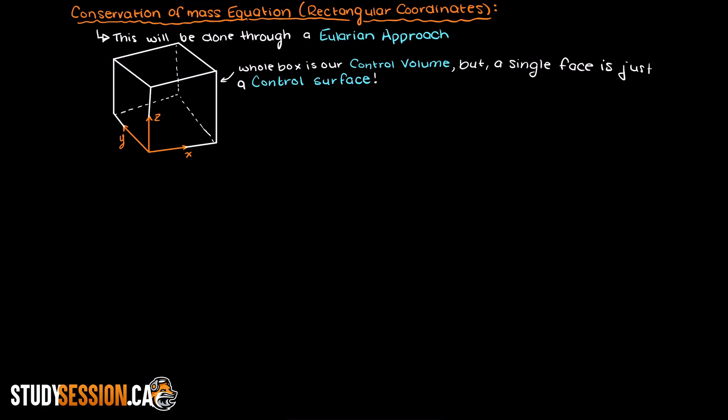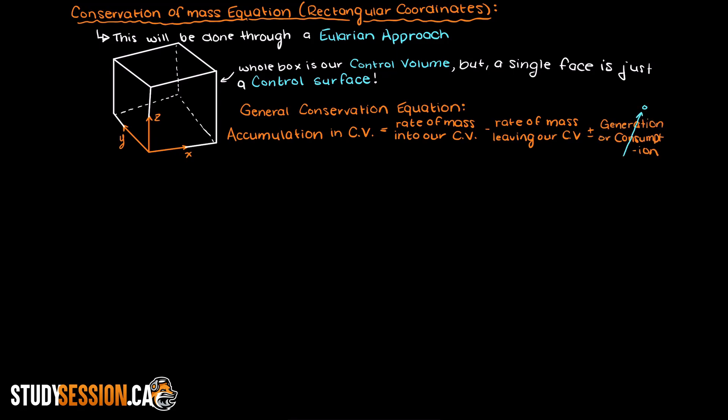So to better understand this, let's write the general conservation equation, which is the accumulation within our control volume is equal to the rate of the mass entering our control volume minus the rate of the mass leaving our control volume plus any generation within the control volume minus any mass consumed within our control volume. Let's assume that we do not have any reactions in this equation, therefore our generation and consumption terms will both be zero.